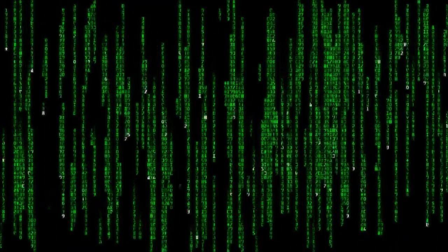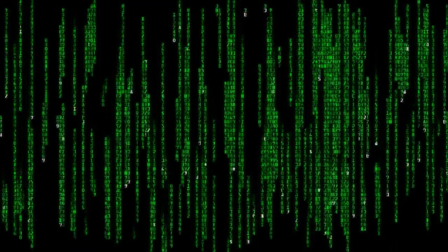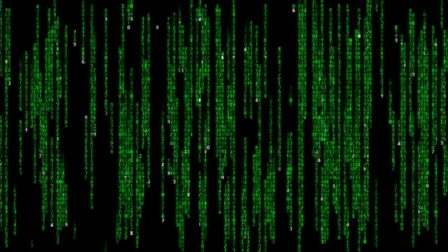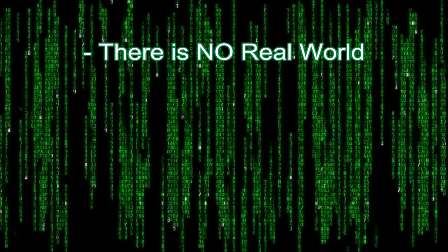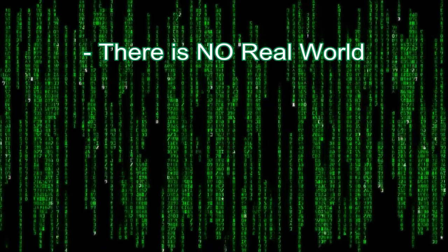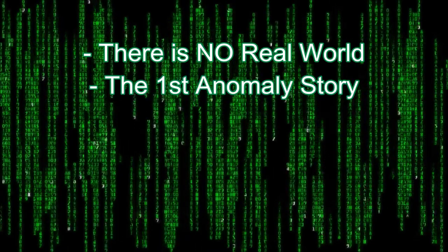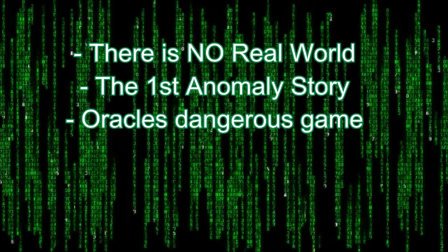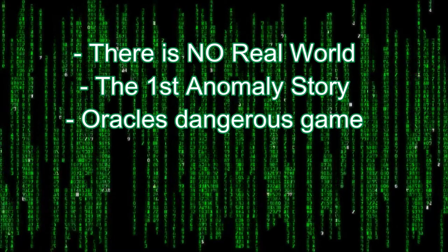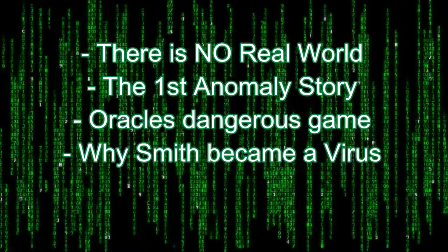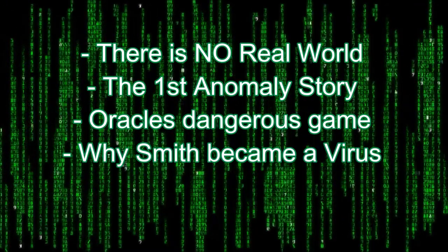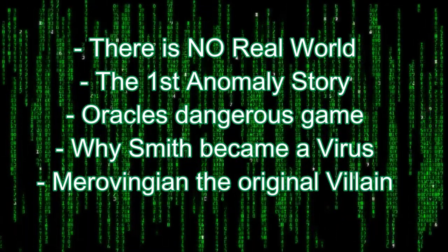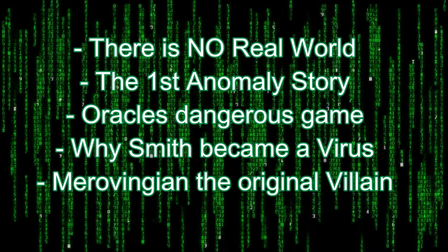Today we're going to cover the following: that the real world just doesn't exist, my theories on the story of the first anomaly and how the Oracle plays such a dangerous game, why Smith became a virus, and how the Merovingian was the original villain. Let's do this.